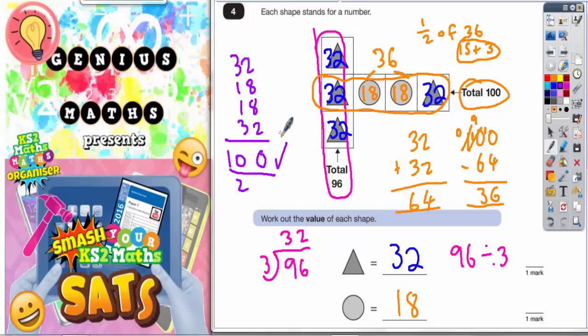So yeah, it does come to 100. So the 18 and the 32 are correct. We can tick those because we know it's all correct.